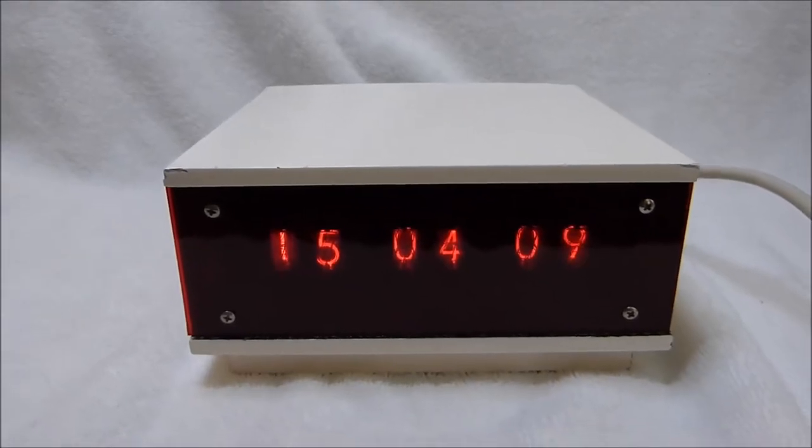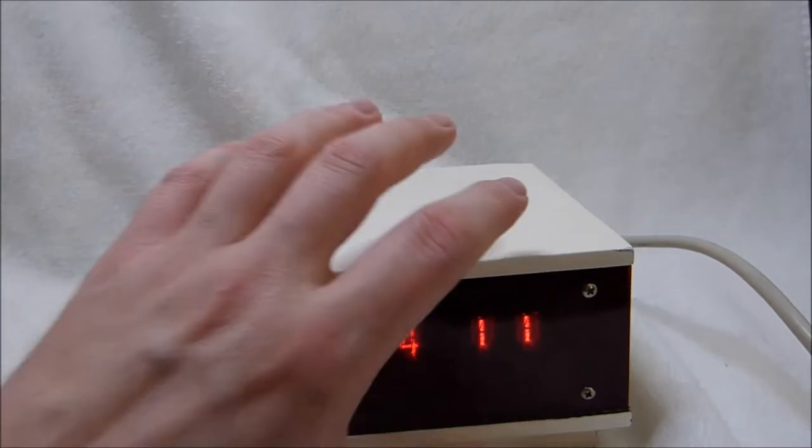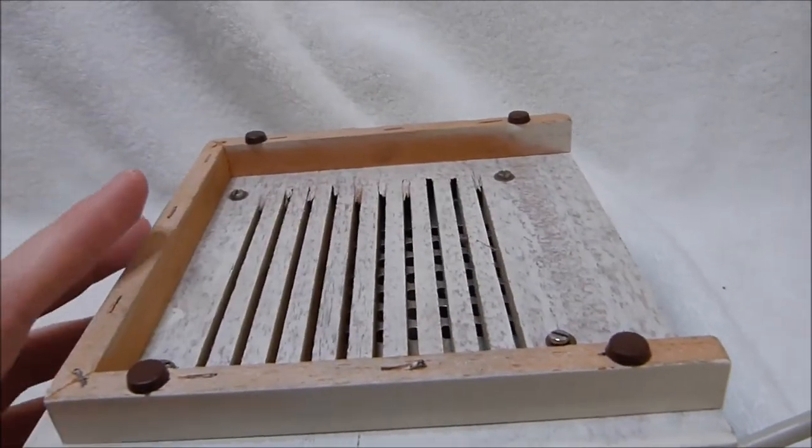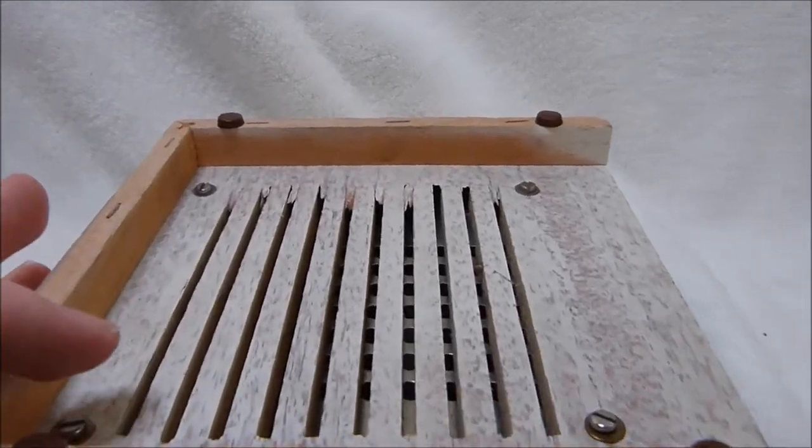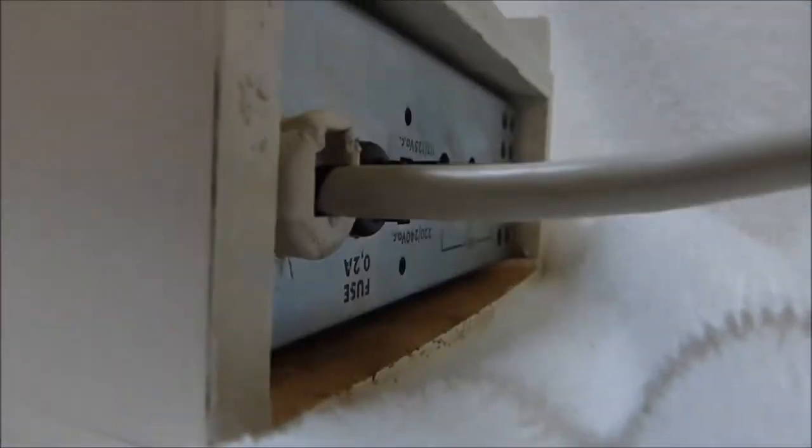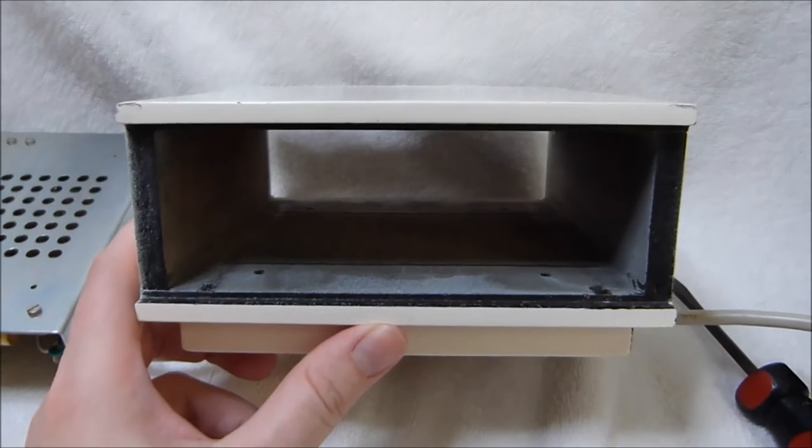Now I'm going to show you the circuitry inside of this clock, because I think it's quite interesting. To take it apart, you just remove these four screws, and then the chassis slides out. I will of course unplug it first. Now that the four screws are out, the chassis just slides forward, and there's the cabinet.